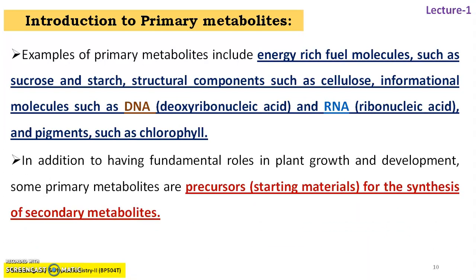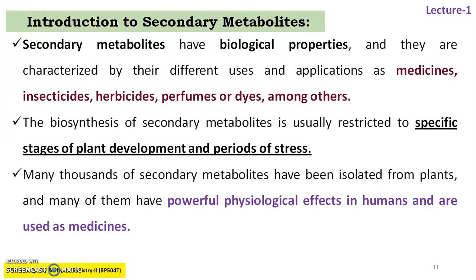In addition to having fundamental roles in plant growth and development, some primary metabolites are important precursors or starting materials for the synthesis of secondary metabolites. Primary metabolites act as a source of energy for the overall growth and development of plant cells. The biosynthesis of secondary metabolites is usually restricted to specific stages of plant development — whenever the plant is in a starting growth phase or a complete growth phase, then only the plant produces secondary metabolites.